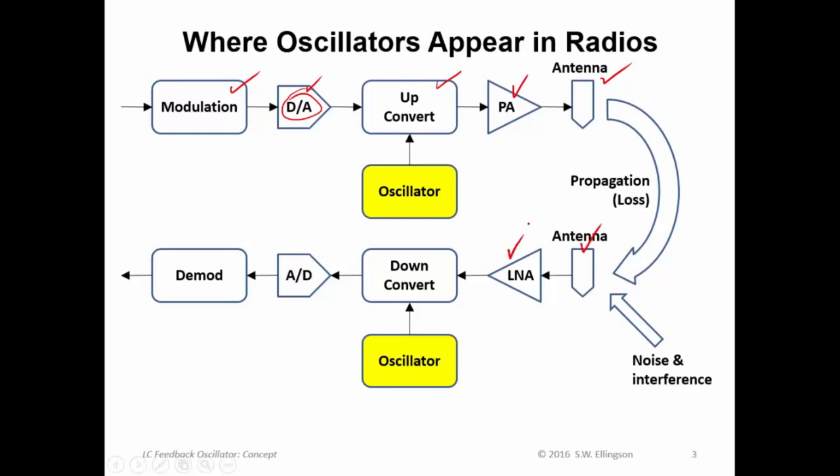And then we radiate the signal and the receiver receives it on the antenna. We have a low noise amplifier and we now have some idea of how those are designed. We down convert to a frequency which is accessible to an analog to digital converter and then we do demod. So this is one very common type of architecture.